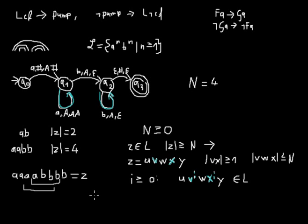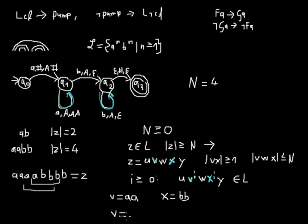The pumping lemma says you just need one separation for a word that holds. It doesn't mean that every separation holds — it means there exists one separation for which the pumping lemma must hold. So in my example, V could be two a's and X could be two b's. If I take i as two, I would have two extra sets of two a's and two b's. But it would also work to say V is one a and X is one b — you just need one valid separation for the thing to work. Thanks.